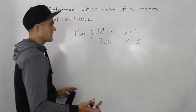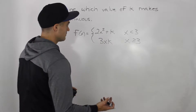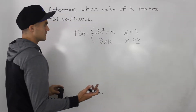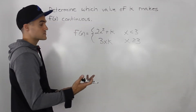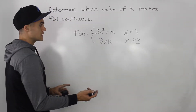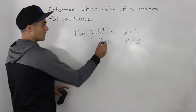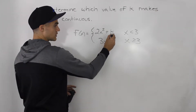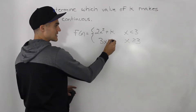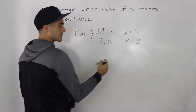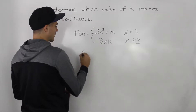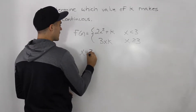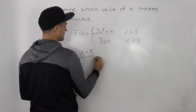Not too bad of a question. Basically, for a piecewise function to be continuous, as we said, the y-values have to equal at the meeting points. And notice there's only one meeting point here, an x-value of 3.